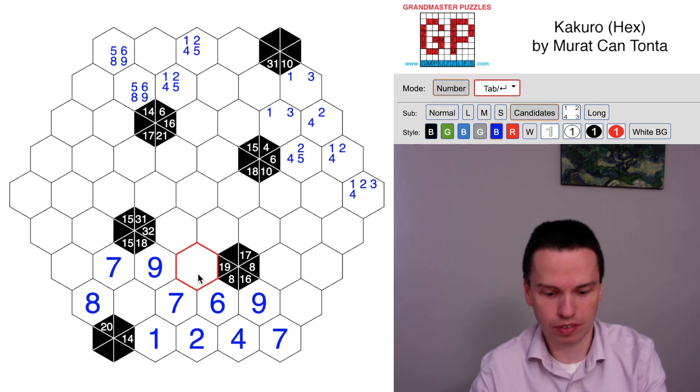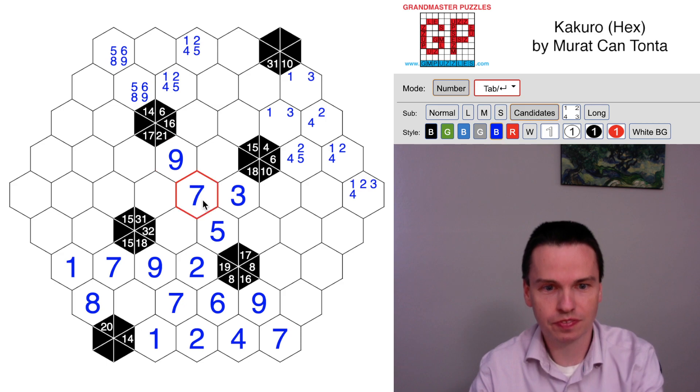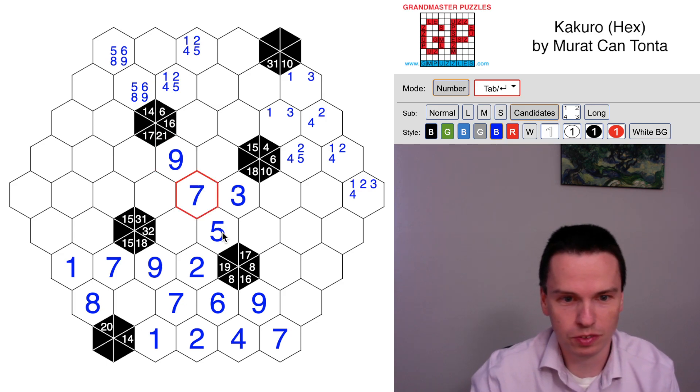Placing that in, we now have 2, 3, 5 left to go in these cells. This 19 can't be large, so 2 or 1 is how that goes. This 21 can't have 3, which is too small, leave behind 18 in 2 cells, which is impossible, so this has to be the 5. And that leaves behind 16, which is 9 and 7.